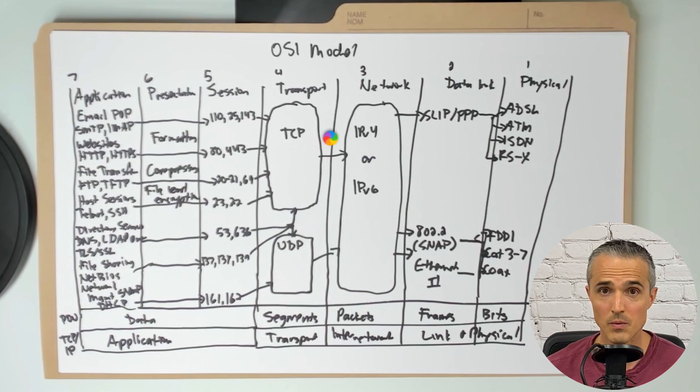Next is the network layer 3. That's using IPv4 and IPv6. Layer 2, SLIP, that's serial line internet protocol, and point-to-point protocol.